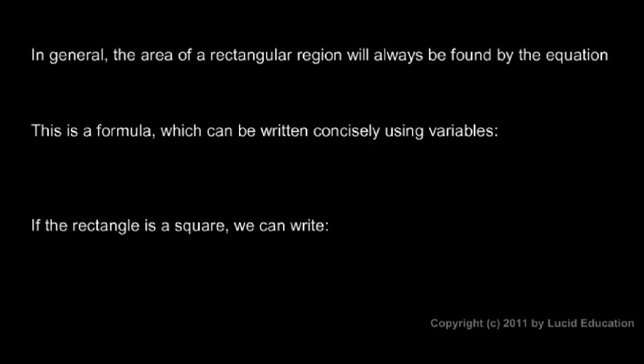And in general, the area of a rectangular region can be found with this formula. The area is the length times the width. But instead of writing out all of those words, we can say the same thing a lot more concisely using variables. A for area, L for length, and W for width. Area is length times width.